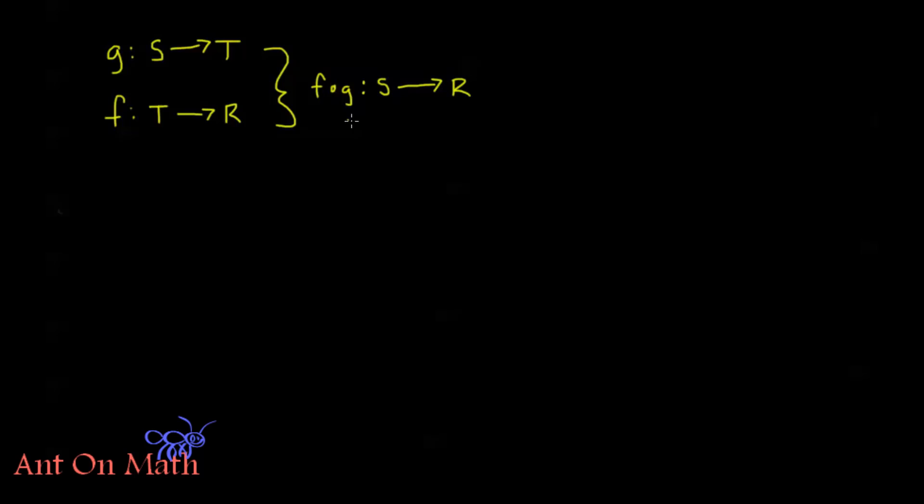Now this follows along with the composition that we learned about with relations. What I'm doing is I'm going through the function g first from S to some element in T. Then I'm taking that same little t and I know that's going to be defined in my function f because t is in T. And so I'm going from that little t through the function f to R. So I'm reading it from right to left, going from little s all the way to little r.